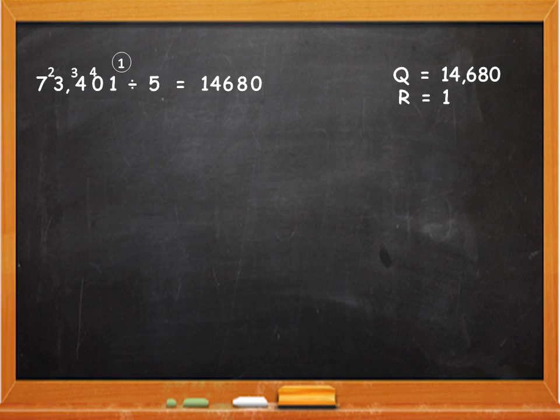Now, next example is 25,638 divided by 8. The first digit 2, can it be divided by 8? No, it is smaller. So you take 2 and 5 together. 25 by 8. 8 will go 3 times in 25. 8 threes are 24. 25 minus 24 is 1. Now divide 16 by 8. 8 twos are 16 and there is no remainder. So divide 3 by 8, which is not possible. 3 is smaller. So take 3 and 8 together and divide 38 by 8.